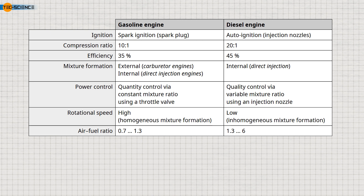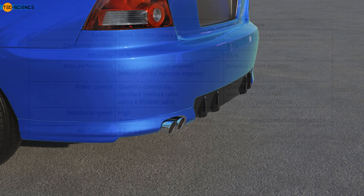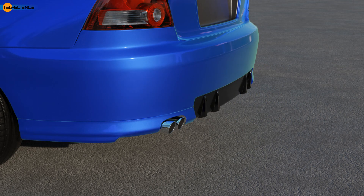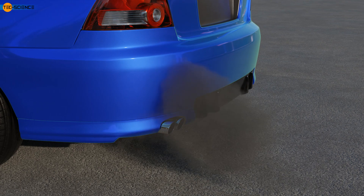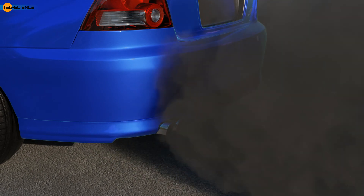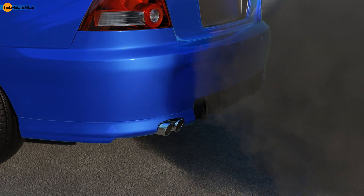If you have ever covered the exhaust of a diesel engine for a moment, you have probably noticed a huge black cloud of soot. This soot formation is related to the lack of air that occurs when the exhaust pipe is blocked, as the accumulated exhaust gases prevent fresh air from entering the cylinder.